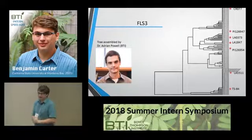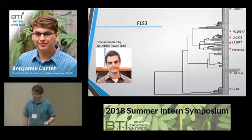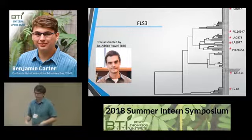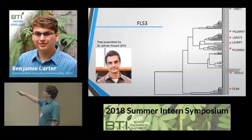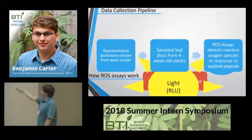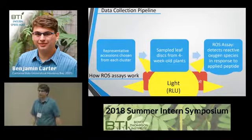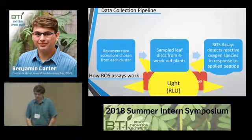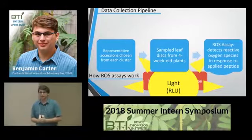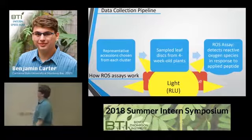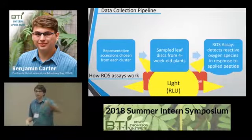I removed the water and added a solution of horseradish peroxidase, luminol, and whichever PAMP I was screening for. The plates were then immediately placed into a 96-well plate reader, and the ROS assay began. Horseradish peroxidase reacts with reactive oxygen species to catalyze luminol, which then produces luminescence proportionate to the amount of reactive oxygen species in solution. These emissions are then measured over a 45-minute time frame and used to gauge the reactivity towards the PAMP. The reactive oxygen species came from the PTI reactions.